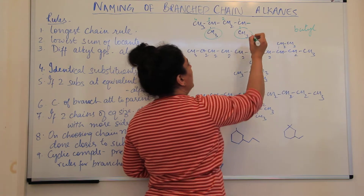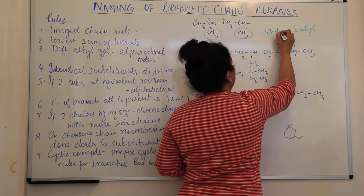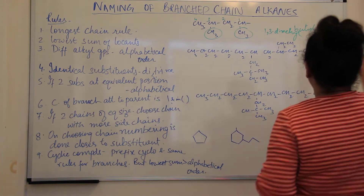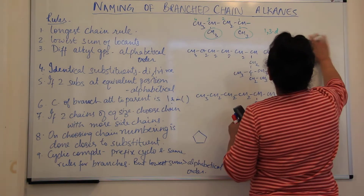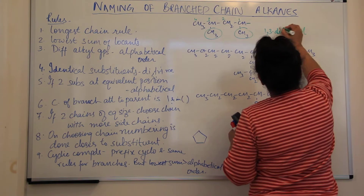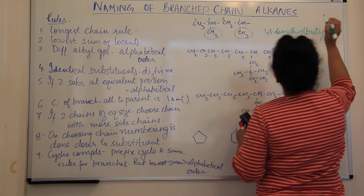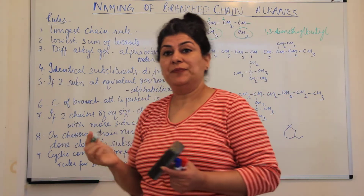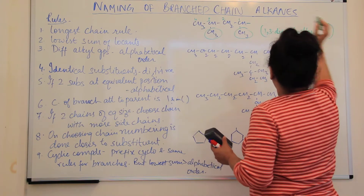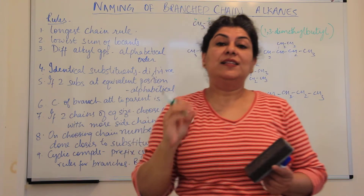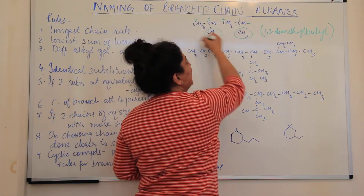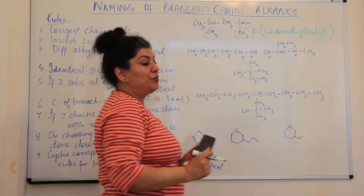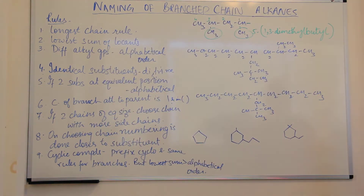So this is the 1,3-dimethylbutyl group. But this entire group is itself a substituent; therefore, it should also have a locant in the main hydrocarbon. This entire thing is put in brackets and a locant is assigned to it, telling us at which carbon this entire group is attached. For example, if it was attached to the fifth carbon of a decane, we would say 5-(1,3-dimethylbutyl)decane.